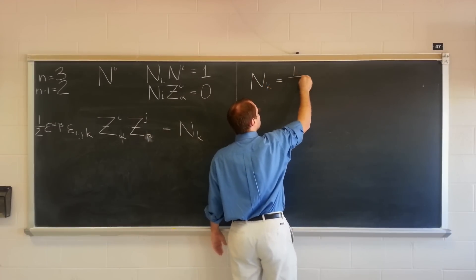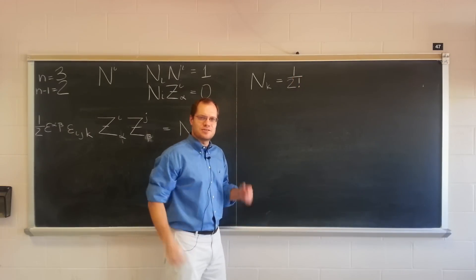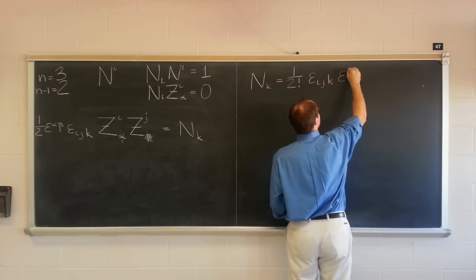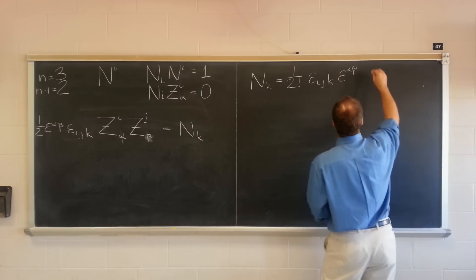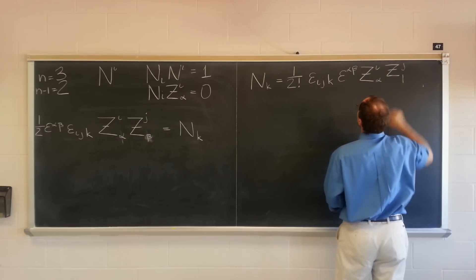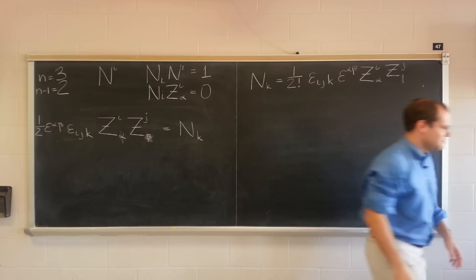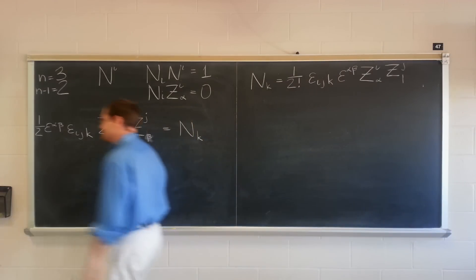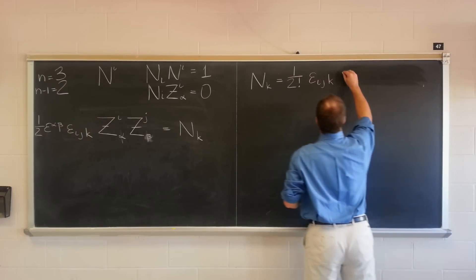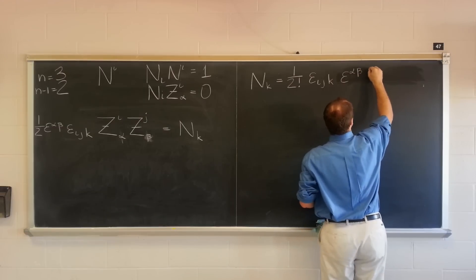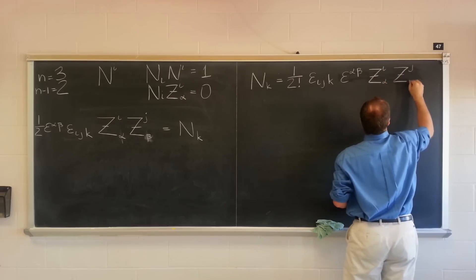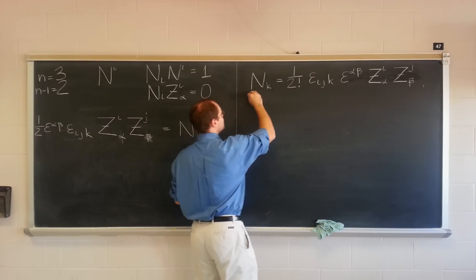So let me write it down in a pretty way. n_k equals one over 2 factorial — because that's how it generalizes to higher dimensions — times epsilon_ijk, because we're doing the cross-product, times epsilon_alpha_beta, because we're trying to get rid of those explicit 1 and 2, times the two shift tensors z_i_alpha and z_j_beta. And there you go: an explicit expression for the normal.